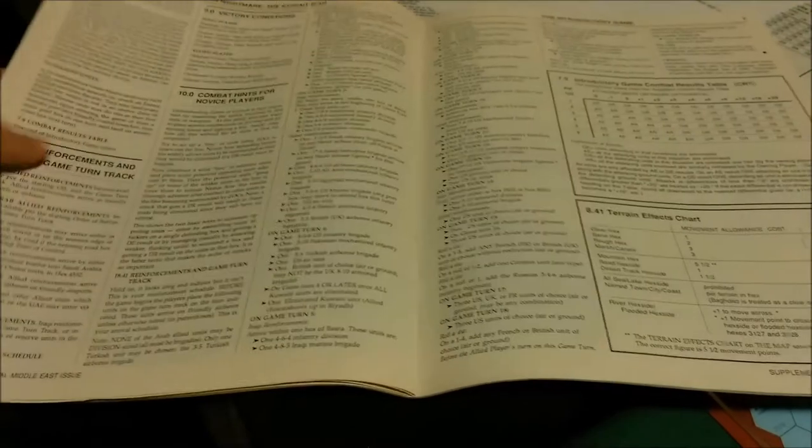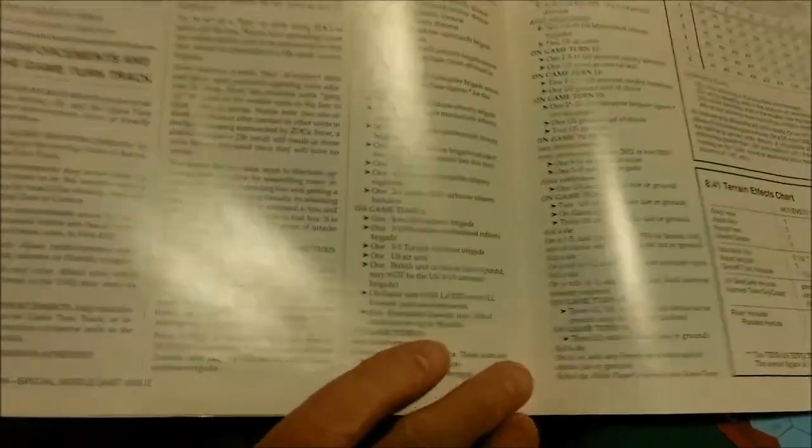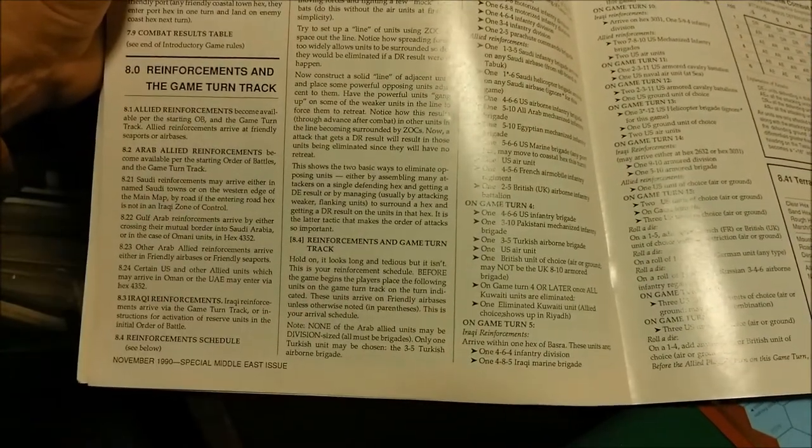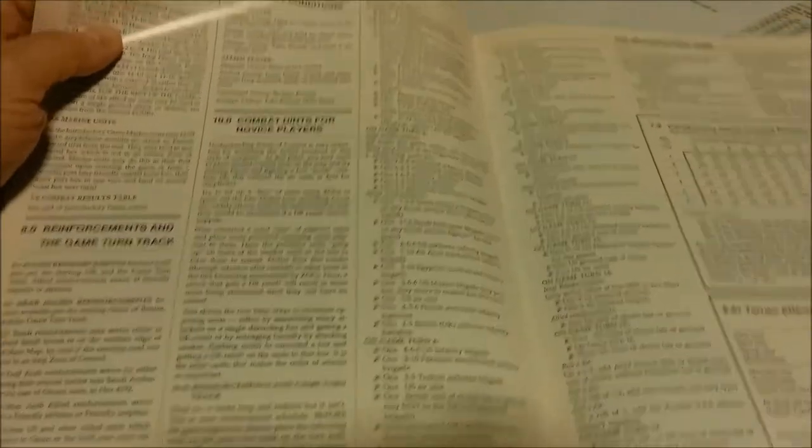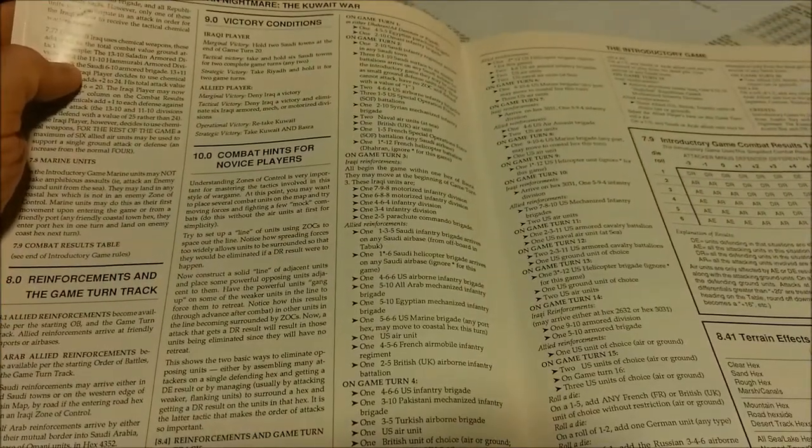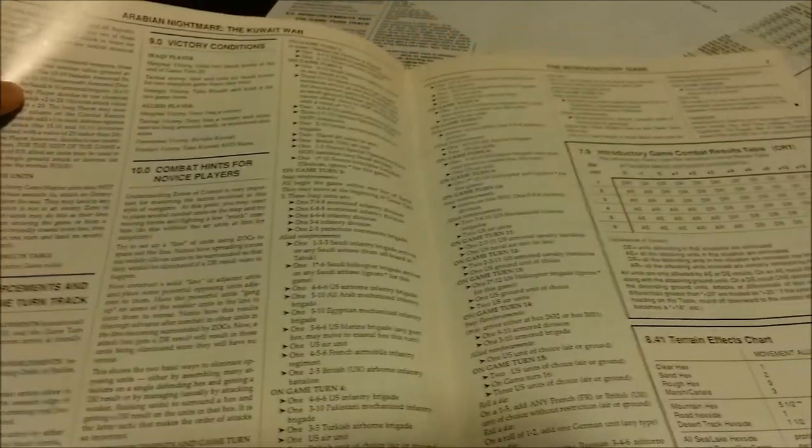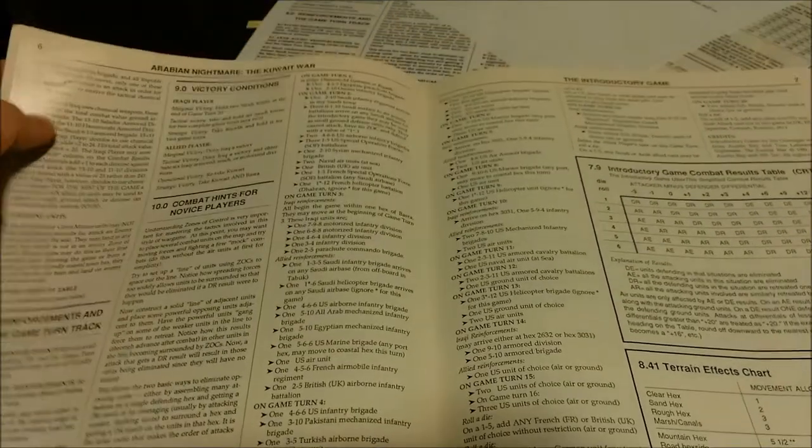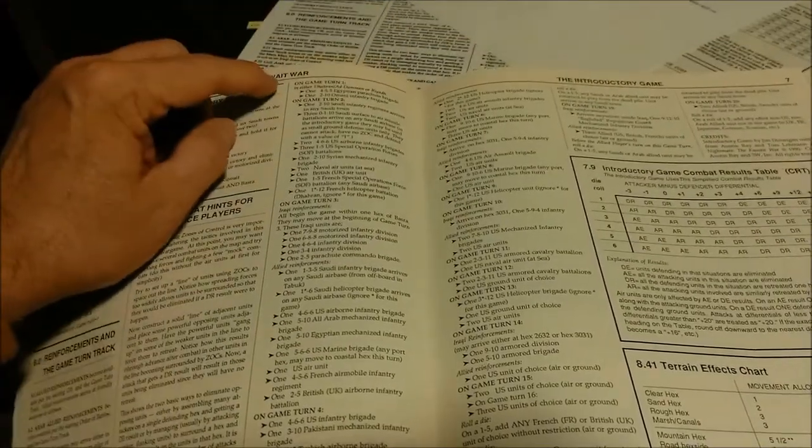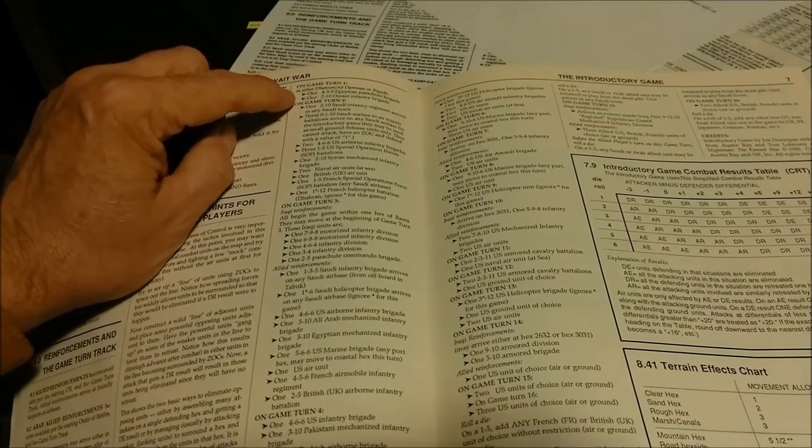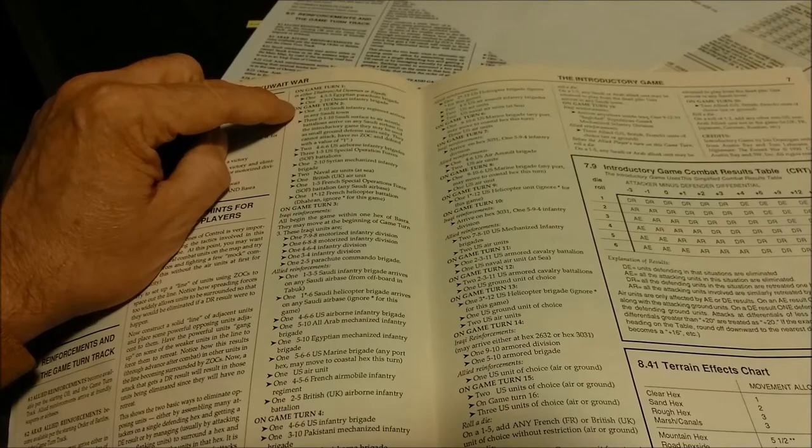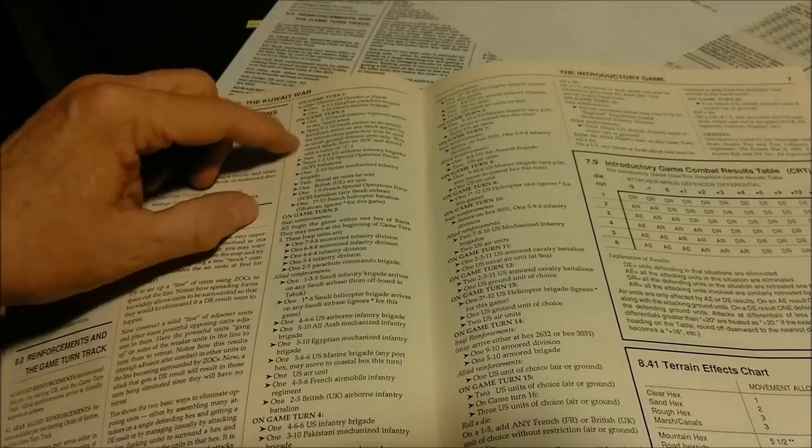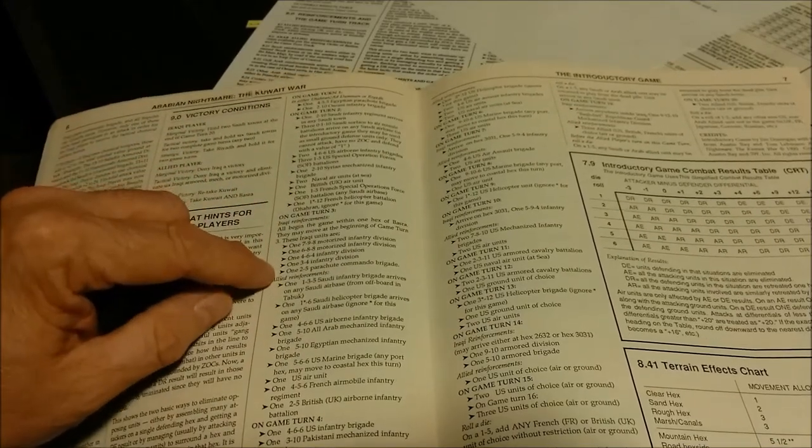We have reinforcements in the game turn track. At the top we have victory conditions, and then the combat hints for novice players. Then we have what begins the reinforcements in game turn tracks. Like on game turn 1, we'll have 1-455 Egyptian parachute brigade enter, and 1-2-10 Omani infantry brigade. Then on game turn 2, we'll get all these units. Game turn 3, we'll get all these units, and so on and so forth.